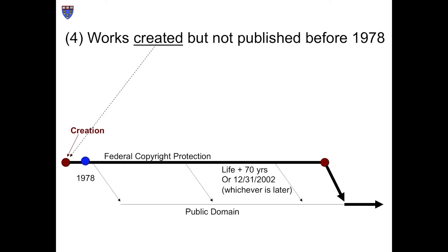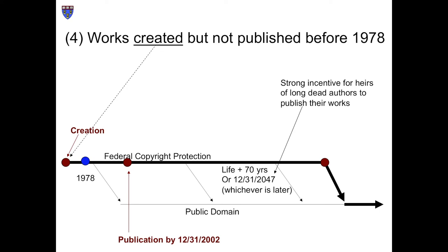Works in the fourth category overlap the fundamental change in the copyright system caused by the general reform of the statute in 1976. These were created but not published before 1978. Federal copyright protection for these lasts for the lives of their authors plus 70 years, or the end of 2002, whichever is later. In addition, if they were published by the end of 2002, they got an extra lease on life until, at a minimum, the end of 2047. The purpose and effect of this provision was to nudge the heirs of the authors of such works to publish them.